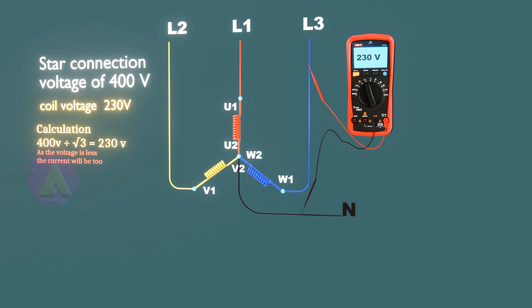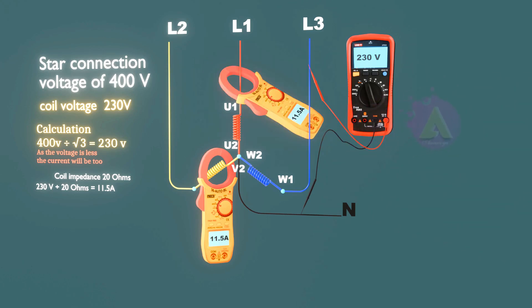As the voltage is less, the current will be less too. This coil also has impedance of 20 ohms, so 230 volts divided by 20 ohms equals 11.5 amps. The line current will therefore also be the same at 11.5 amps.